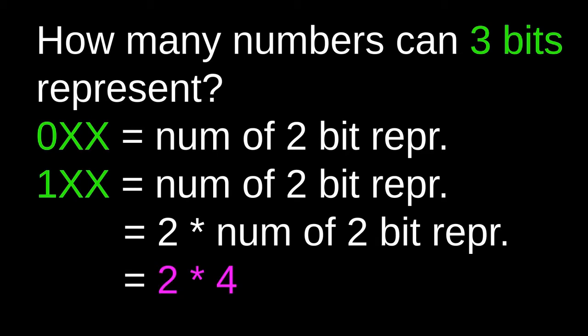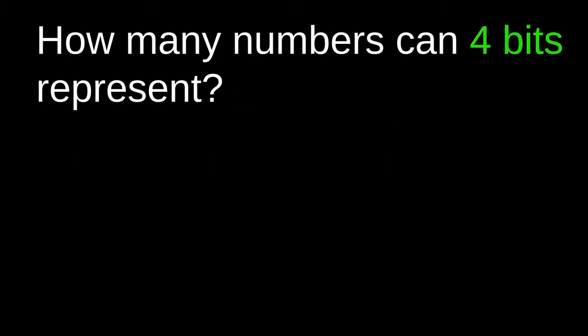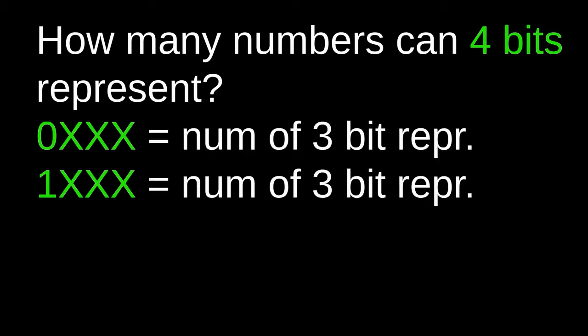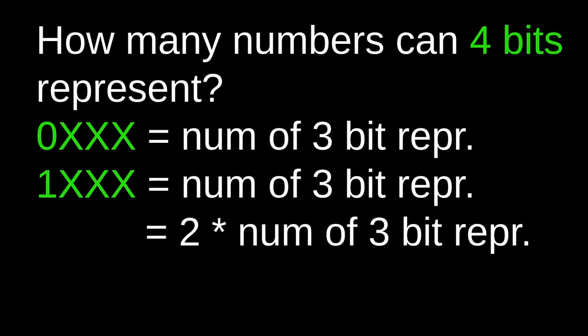The number of two-bit representations is equal to 4, so three bits gives us 2 times 4, which is equal to 8. We can apply the same reasoning to calculate the number of four-bit representations. A four-bit sequence starts with a 0 followed by three 1s and 0s, or starts with a 1 followed by three 1s and 0s. In both cases the number of arrangements equals the number of three-bit representations, which is 8, so the total is 2 times 8, which is equal to 16.